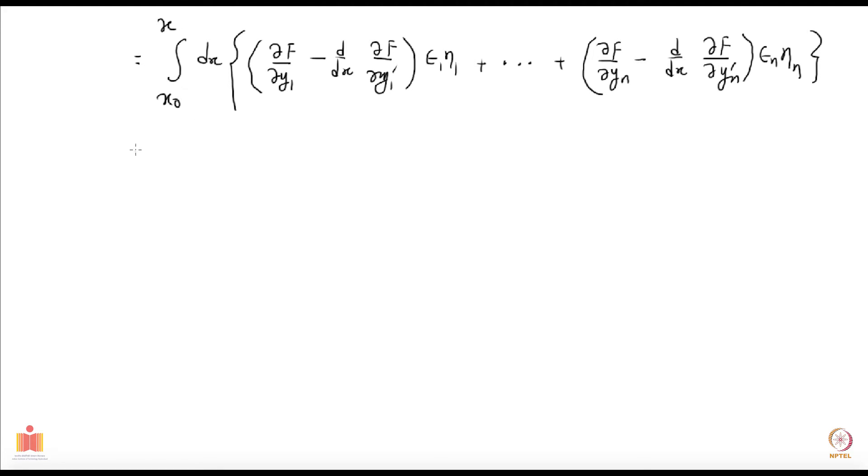Let me put first eta 2, eta 3 and all of them to be 0 except for the eta 1. If I do so, then I am left with only this term and I can conclude that because eta 1 is arbitrary that by fundamental lemma of calculus of variation that this piece in the square brackets has to vanish. Just as before I get the condition that d over dx delta f over delta y1 prime minus delta f over delta y1 is equal to 0.